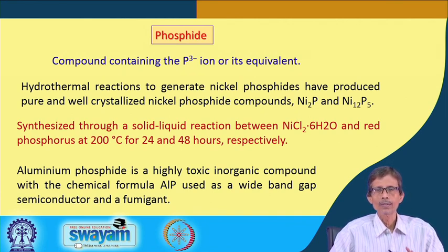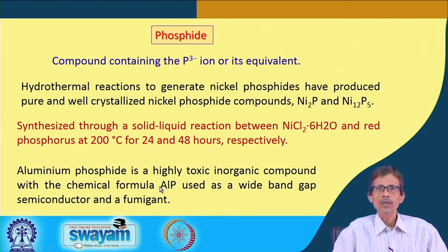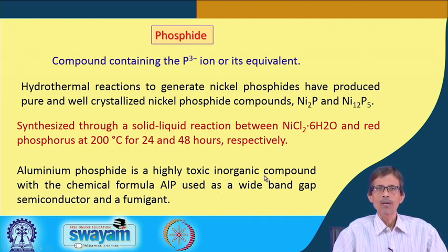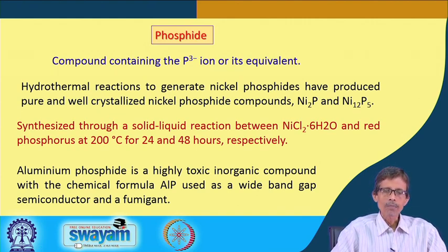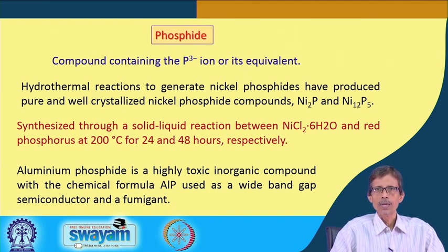Similarly, aluminum phosphide has a simple formula: AlP. Aluminum is trivalent — Al³⁺ — and phosphorus is present as the phosphide ion P³⁻, giving a 1:1 composition for aluminum and phosphide ion. However, it is a highly toxic inorganic compound. Whenever a compound is labeled as environmentally banned or a restricted item, we should be careful in handling it and should not make it in huge amounts — only for some special purpose when needed.